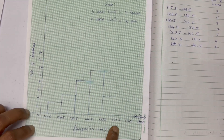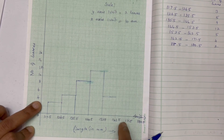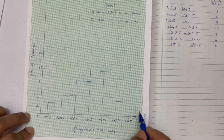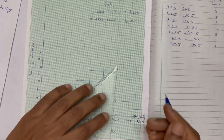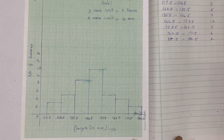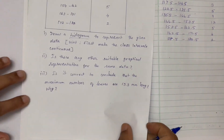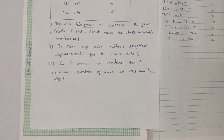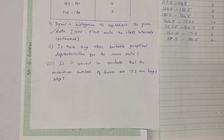The next interval 162 to 175 has 4 leaves. This is the histogram. We will see the question — where any other suitable graphical representation for the same data can be drawn.